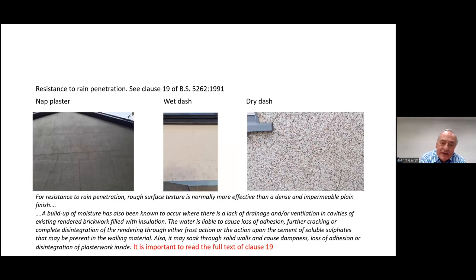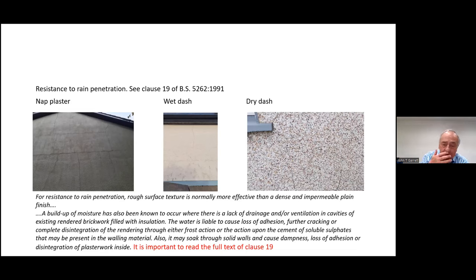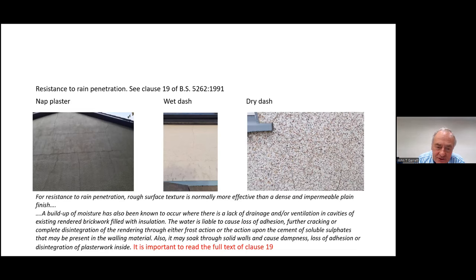In terms of resistance to rain penetration, it's very worthwhile to read BS 5262:1991, and particularly the full text of clause 19 of 5262. Looking at three photographs: the cracking is much easier to see in smooth plastered finishes — you can see the pattern cracking there on the left-hand photograph. In the middle you've got a wet dash finish, not quite as obvious. And on the right-hand side you've got the dry dash finish, where it's much more difficult to see cracking. So be aware when looking at dry dash finishes — look carefully for the cracks.